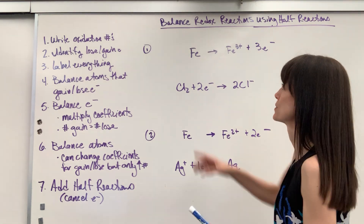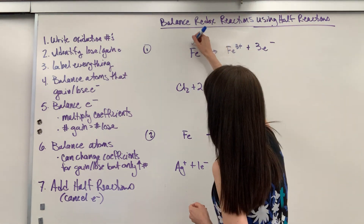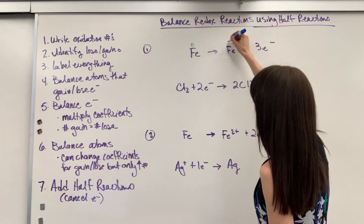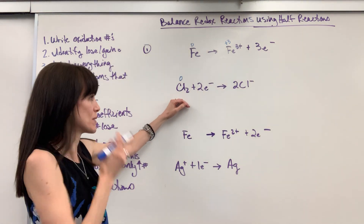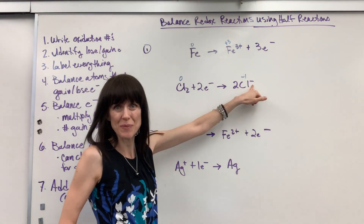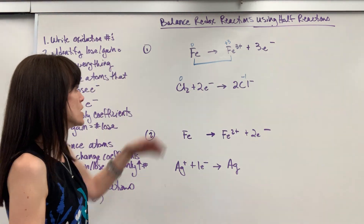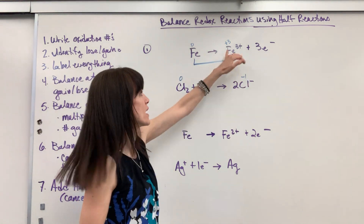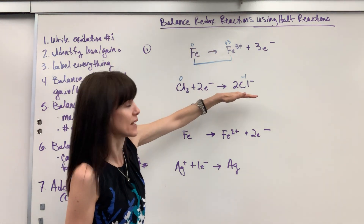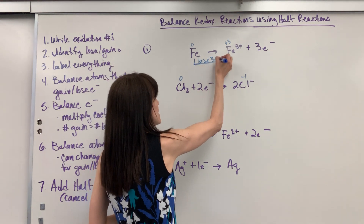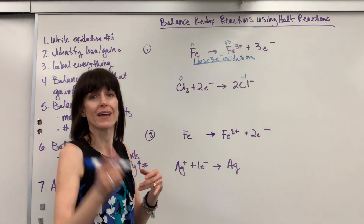So step one, where we always begin, is writing the oxidation numbers. For example one: iron in elemental form is zero; as a monoatomic ion Fe³⁺ it's plus three — the charge equals the oxidation number. Chlorine in elemental form is zero; Cl⁻ becomes minus one as a monoatomic ion. Now, iron is going from zero to plus three, meaning it lost three electrons — that's LEO, lose electrons oxidation. So this is oxidation.